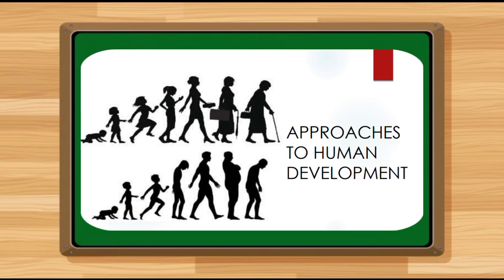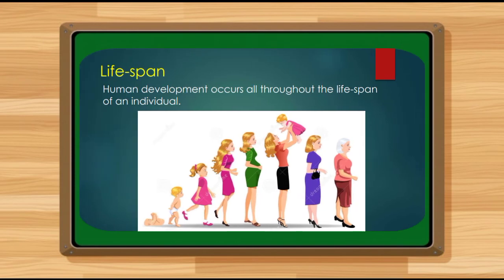Aside from the traditional approach, we have the second approach in human development, which is the opposite — the lifespan approach. In the lifespan approach, human development occurs all throughout the lifespan of an individual. Unlike the traditional approach where there is extensive change from birth to adolescence and little or no change in adulthood, in the lifespan approach the change is more equally distributed throughout all stages.